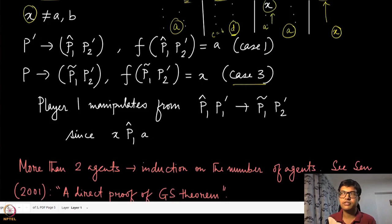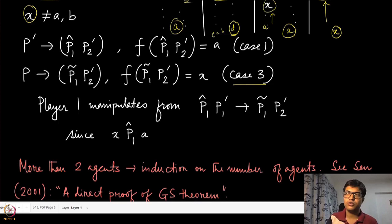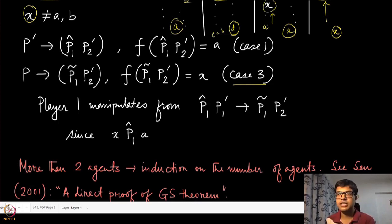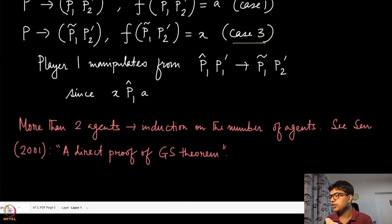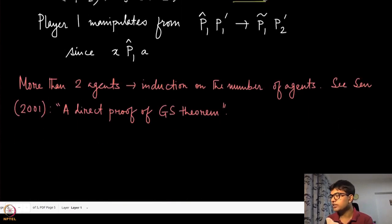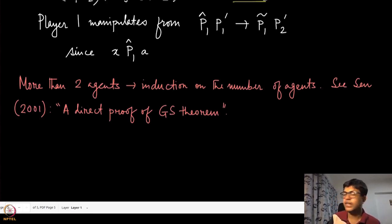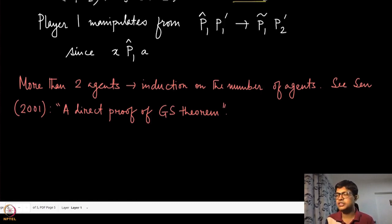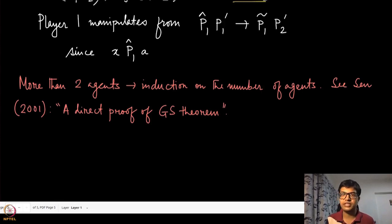That concludes the proof of all exhaustive cases and proves the Gibbard-Satterthwaite result for two agents. This is the main intuition. The actual proof for more than two agents uses induction on the number of agents. For complete details, you can refer to the paper titled 'A Direct Proof of the Gibbard-Satterthwaite Theorem' — it requires more accounting than what we have done here.